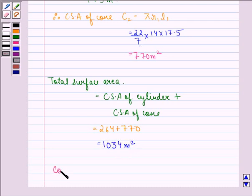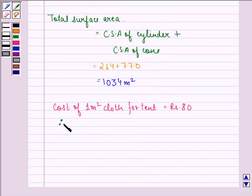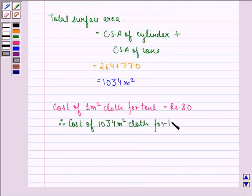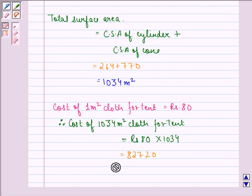The cost of 1 square meter of cloth for the tent is rupees 80. Therefore, the cost of 1034 square meters of cloth is rupees 80 multiplied by 1034, which equals rupees 82,720.